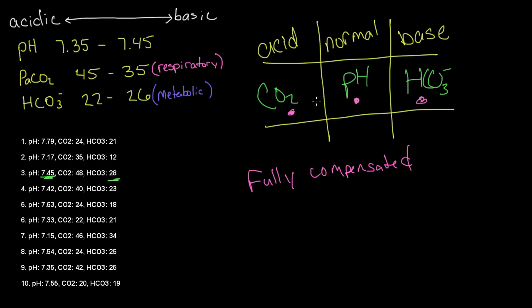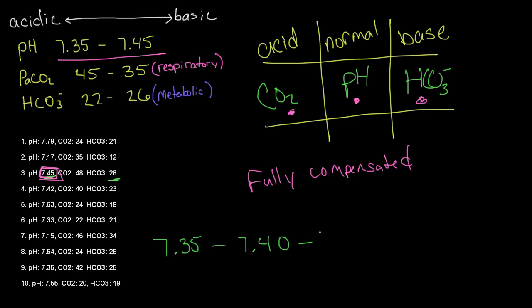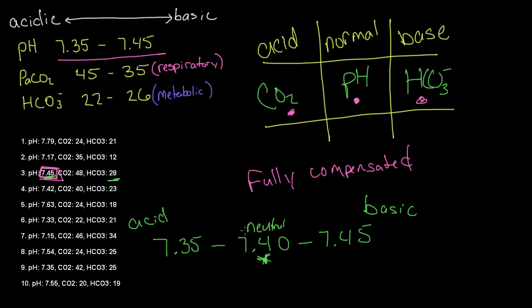We have to go back to our pH value — in this case it is 7.45. We have to ask ourselves which side of our pH scale 7.45 is closer to. The range is 7.35 to 7.40 to 7.45: the left side is more acidic, the right is more basic, and 7.40 is neutral. We need to look at which side of 7.4 our pH falls on. In this case, 7.45 is greater than 7.4, so this means we have an alkalotic condition — we are in alkalosis with full compensation.